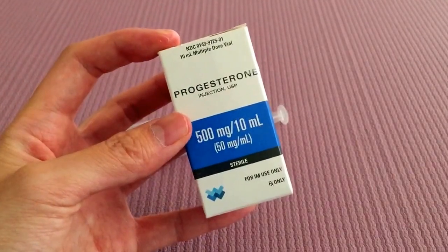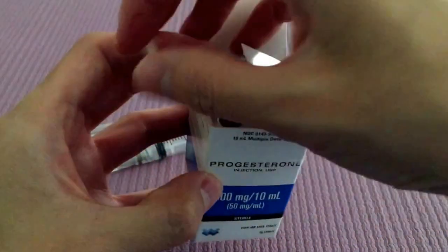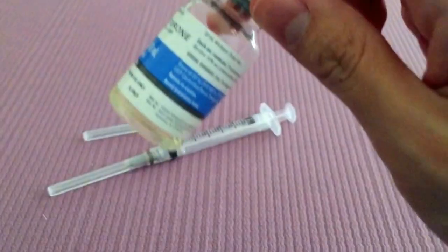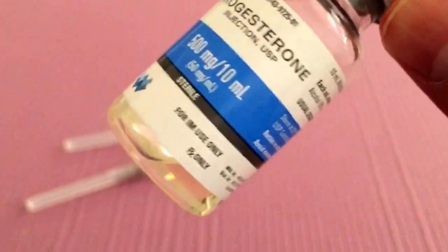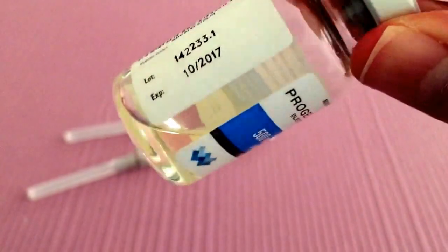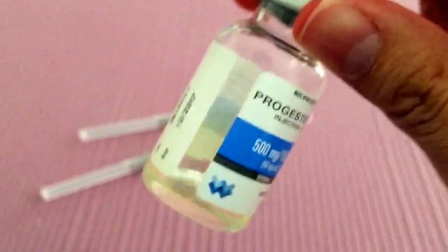Hi everyone, so this is progesterone in oil. Let's look at the vial. Inside you'll find a very thick yellowish liquid. It kind of looks like olive oil.